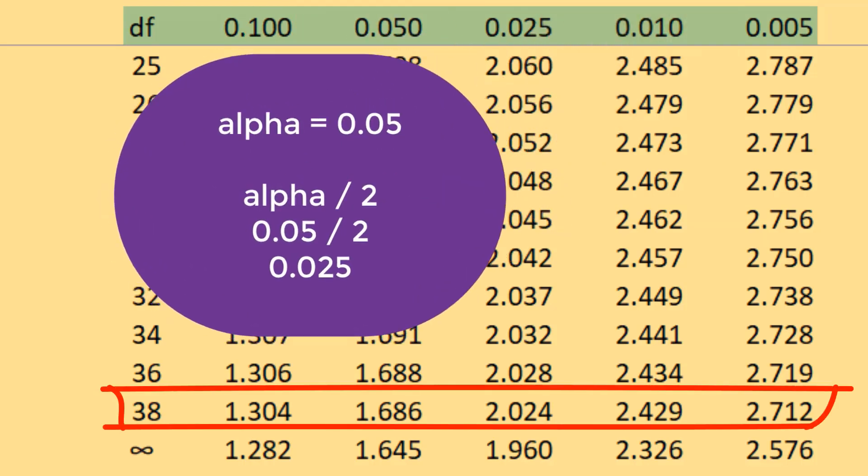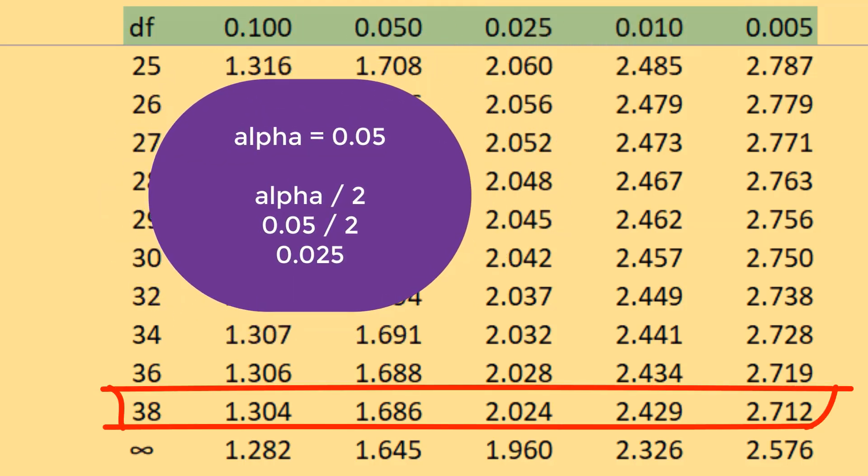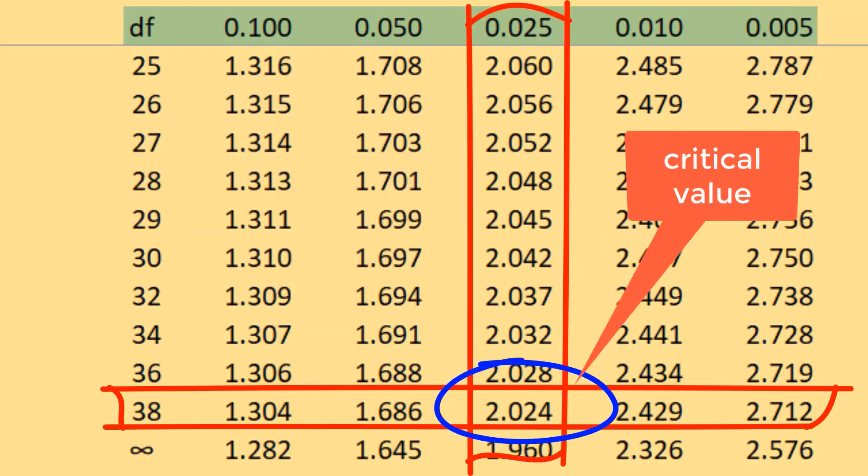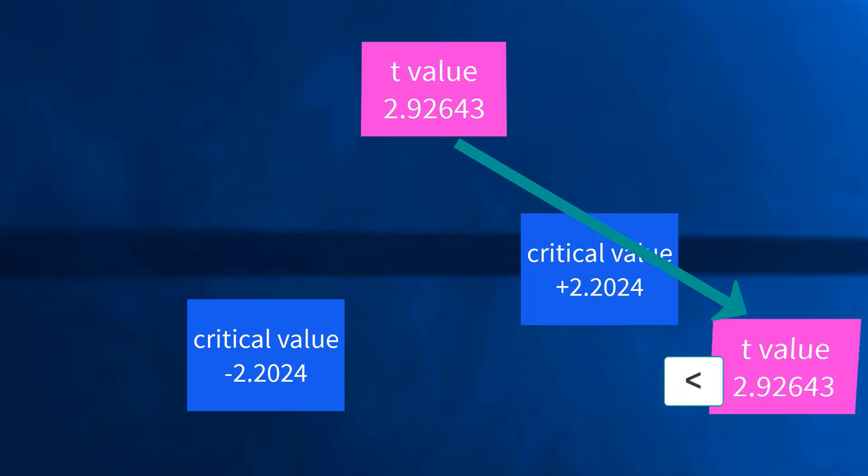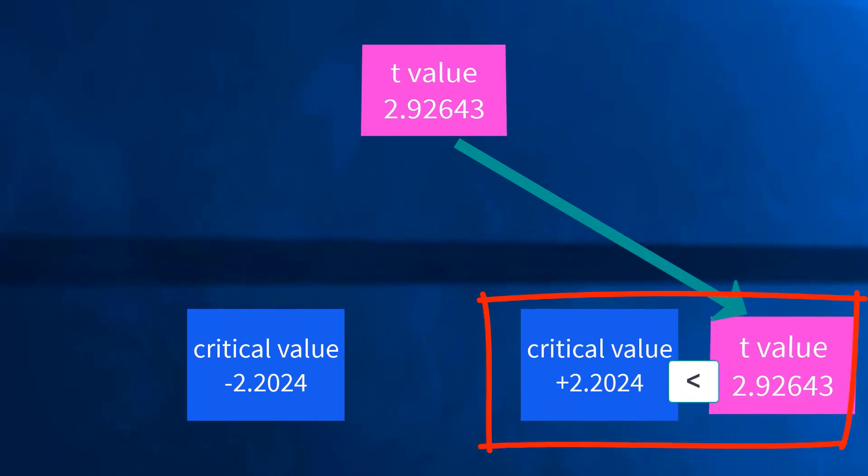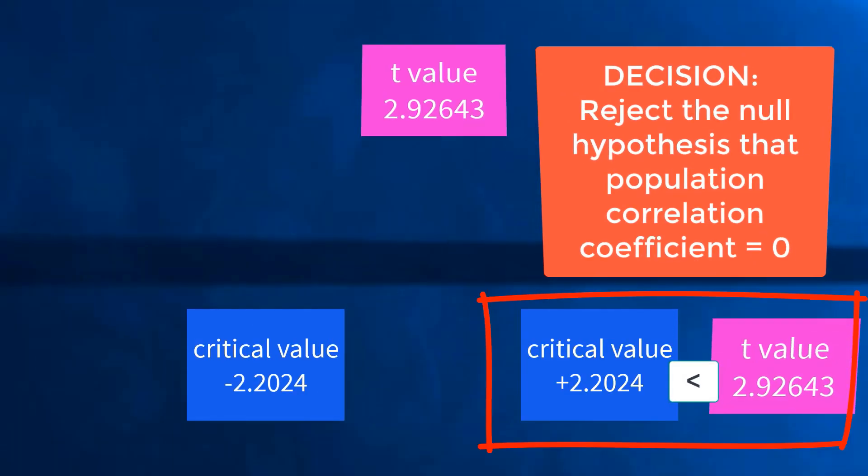Under probability of 0.025, computed as 0.05 significance level divided by 2, we obtain a critical value of 2.024. Because the t-value of 2.92643 is more than the critical value of 2.024, we can reject the null hypothesis that the population correlation coefficient is equal to zero.